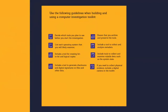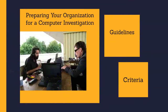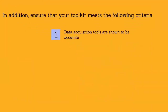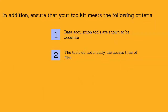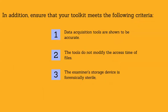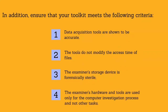If you need to collect physical evidence, include a digital camera in the toolkit. Data acquisition tools should be shown to be accurate — proving accuracy is generally easier if you use well-known computer forensic software. The tools should not modify the access time of files. The examiner's storage device must be forensically sterile, meaning the disk drive does not contain any data before it is used. You can determine whether a storage device is forensically sterile by running a checksum on the device; if the checksum returns all zeros, it does not contain any data. The examiner's hardware and tools should be used only for the computer investigation process and not for other tasks.